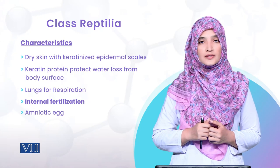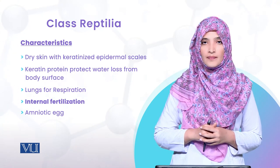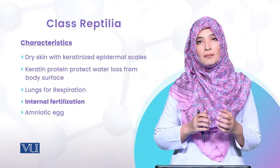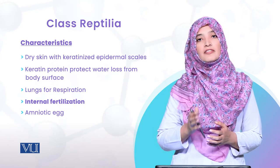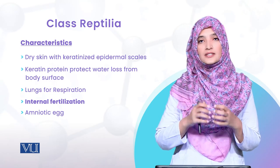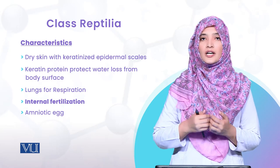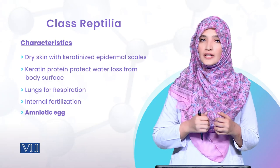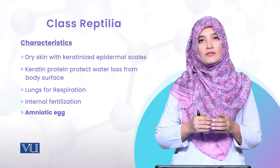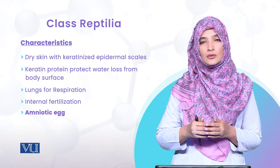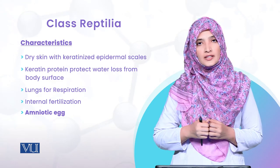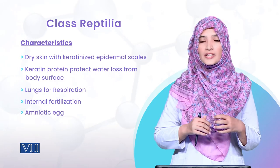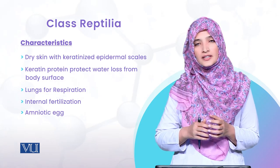تیسری adaptation جو ان کے اندر آئی وہ internal fertilization ہے۔ Copulatory organs ان میں develop ہوئے جس کی وجہ سے male copulatory organs females کو access کر سکتے تھے، اور ان میں internal fertilization start ہوئی۔ اور جو eggs develop ہوئے وہ بھی amniotic تھے — amniotic eggs desiccation سے eggs کو protect کرتے ہیں اگر وہ dry environment میں پڑے ہوں۔